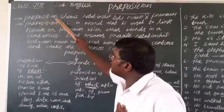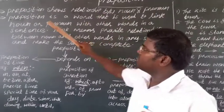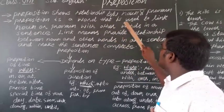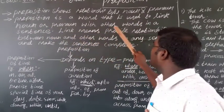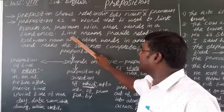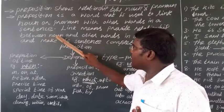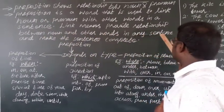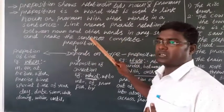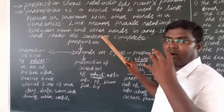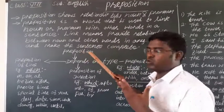Let's understand. Preposition shows relationship between noun, pronoun. Preposition is a word that is used to link noun or pronoun with other words in a sentence. Link means provide relationship between noun and other words in any sentence and make the sentence complete to give complete meaning or complete sense to the sentence.